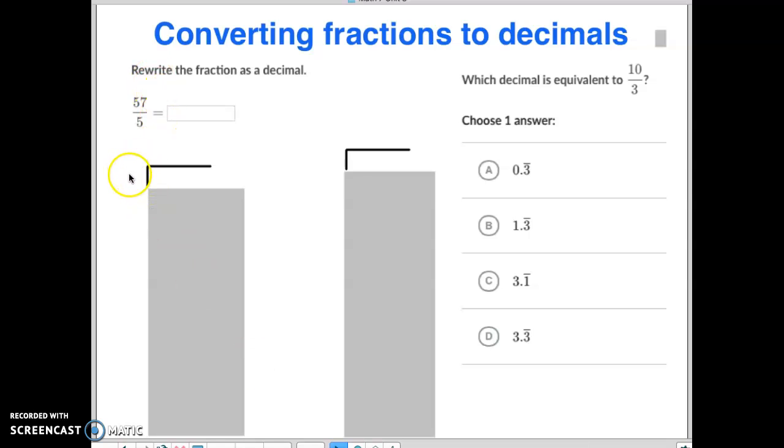So what we do is we put the five on the outside of the fraction here and the 57 on the inside of the fraction. Well, wait, Mr. Hanson, this number is 57, not 57.000. Well, I get that. But when you're dividing this, because you probably noticed five doesn't go into 57 perfectly. So I'm going to add a decimal after the 57 and a bunch of zeros, because zeros after a decimal do not change the number.